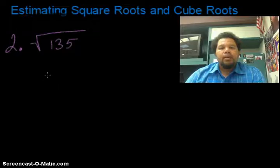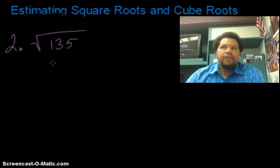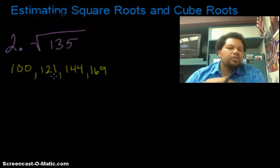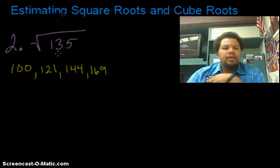Okay, so once again, we're asked to find the square root of a number. This number is 135. And I think to myself, is 135 a perfect square? And I say no. So I start thinking of the perfect squares around 135. So I come up with 100, 121, 144, and 169.